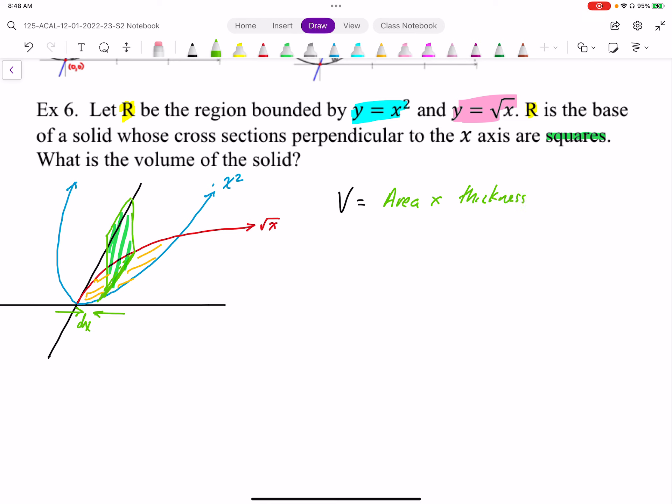So we want to find the volume of this object, which is going to be the area, which is s squared, the side length squared, times dx. And then we're going to sum this all up.